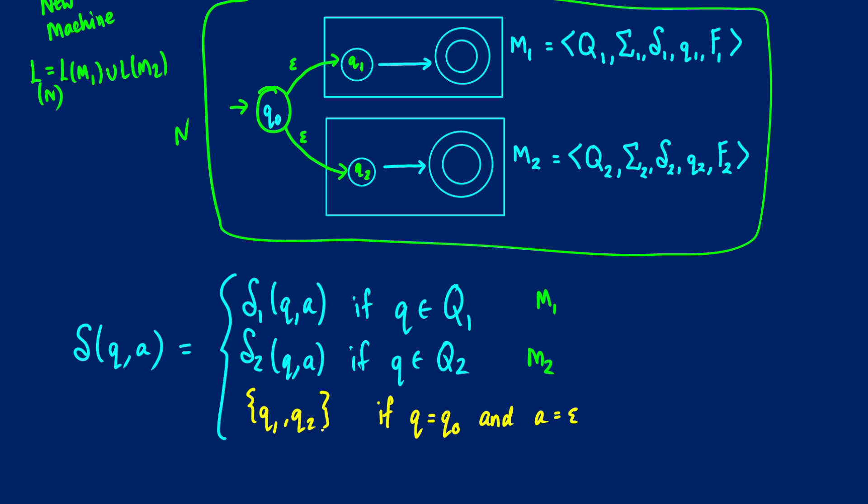Now what if we have anything else that's happening? What if we have Q0 and we get something that's not an empty input like B? Well, we don't have anything to account for that in our NFA. It just goes to the empty set. It rejects itself. So we'll send it to the empty set. And now we have constructed a machine that accepts the union.